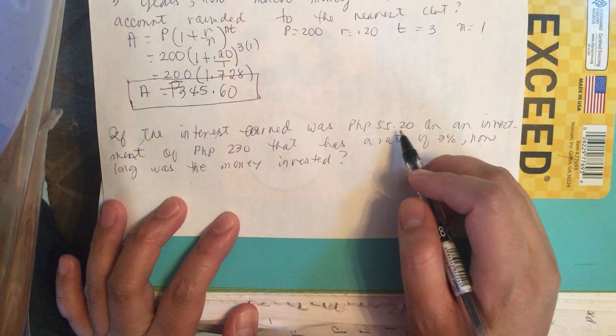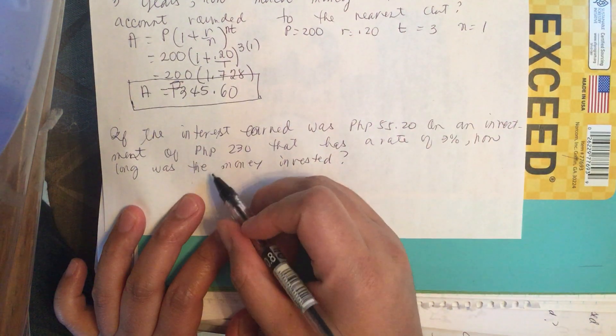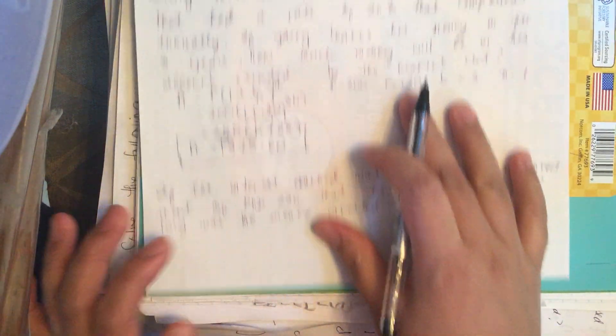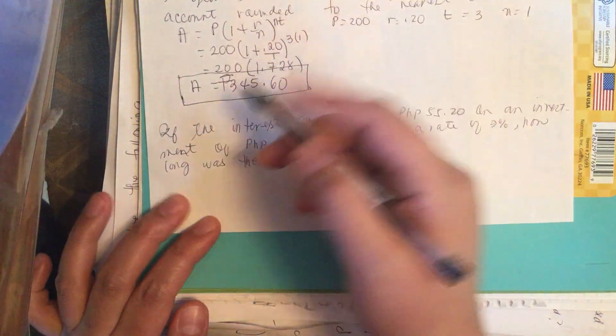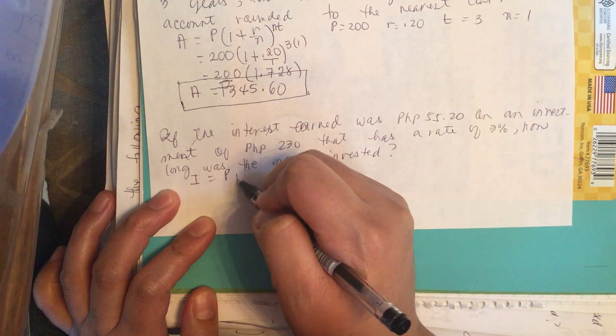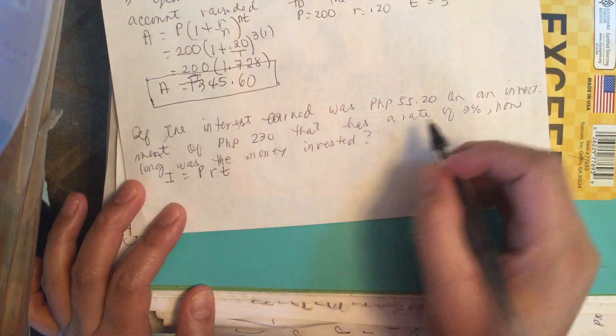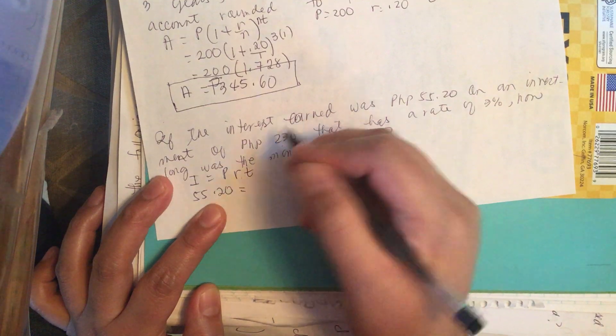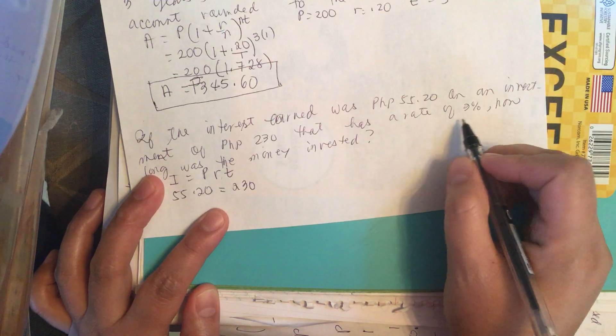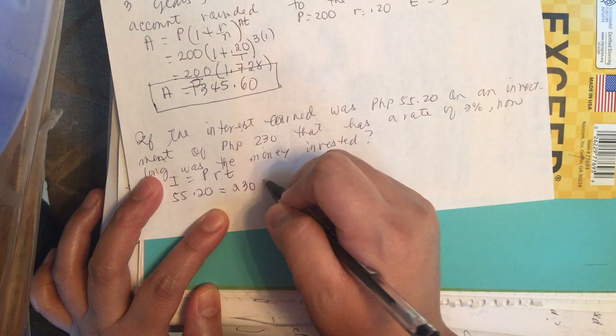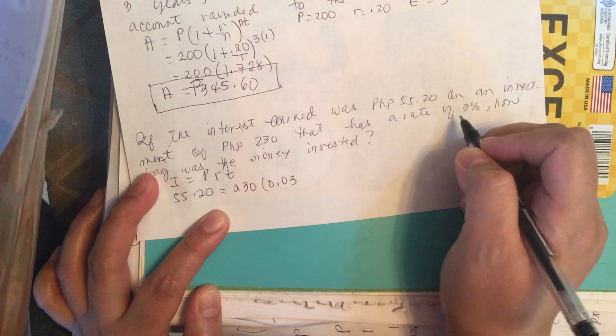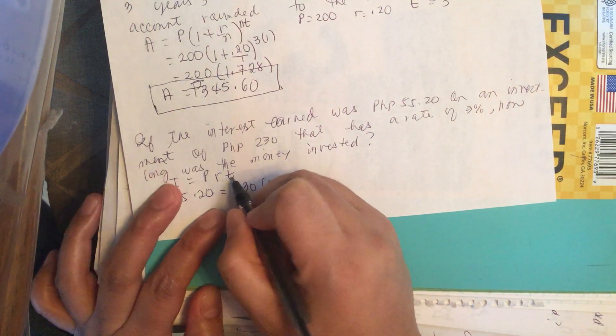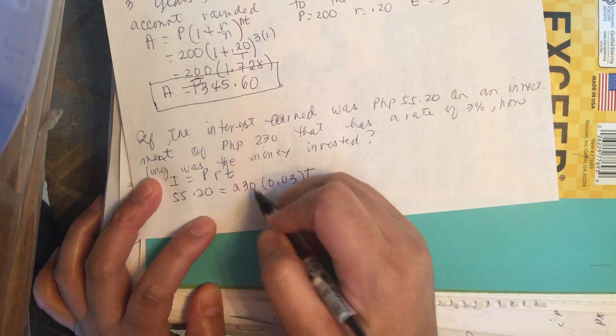If the interest earned was 55.20 pesos on an investment of 230 pesos that has a rate of 3%, how long was the money invested? We can use again this shortcut formula, I is equal to P times R times T. They gave us the interest earned, which is 55.20. We always change the rate to decimal. And then T, they want to know how long, so we just put in T.